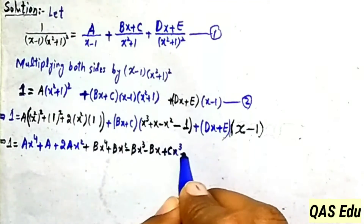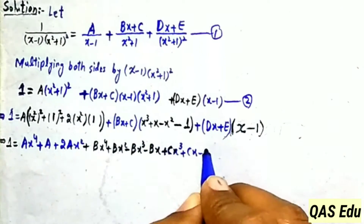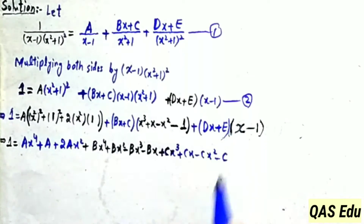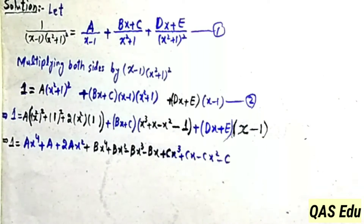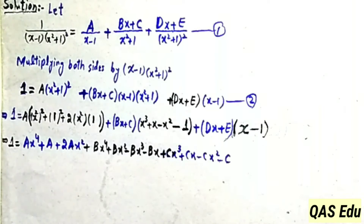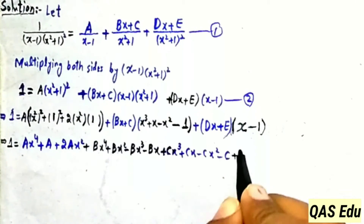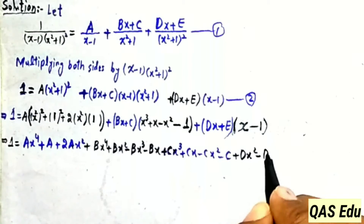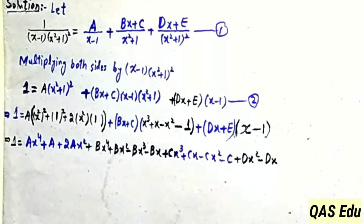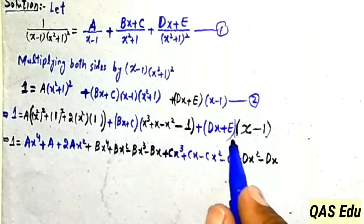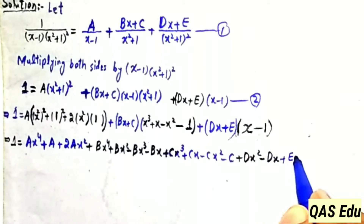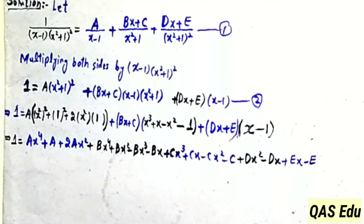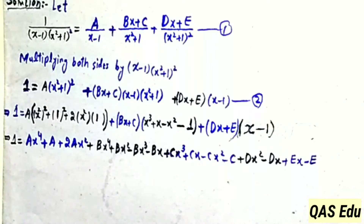Continuing: C times x gives plus Cx; minus C times x square gives minus Cx square; minus C times 1 gives plus C. Then Dx times x gives Dx square; Dx times minus 1 gives minus Dx. E times x gives Ex; minus E times 1 gives minus E. After all multiplication is done, we collect similar powers of x.